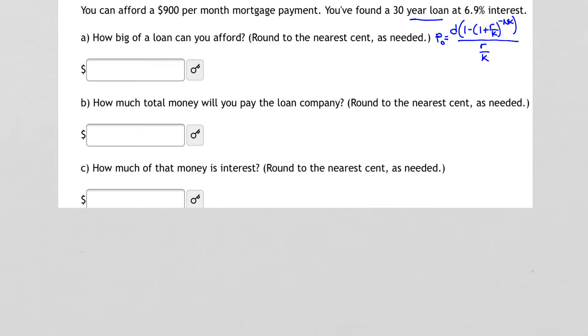So how do we put this formula into our problem? We're first looking in question A about how big of a loan can we afford. That is, we are searching for the amount P sub 0 in this formula. That's what we don't know.